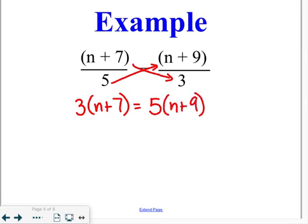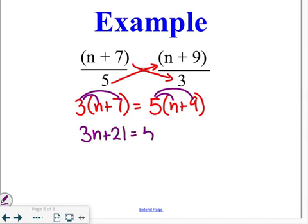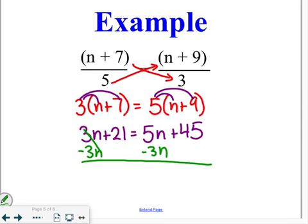When you're looking at something like this, where you have a number on the outside and a group of parentheses on the inside, you're going to need to use that distributive property on both sides of the equation. So, I have 3n plus 21 is equal to 5n plus 45. Again, trying to combine our variables first, we're going to subtract 3n from both sides.